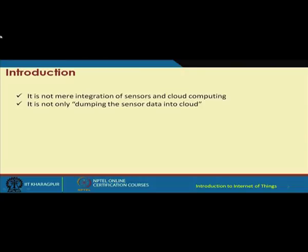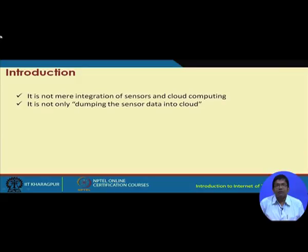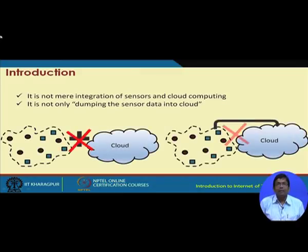In sensor networks, we are primarily concerned about sensing a particular region where sensors are deployed. In cloud computing, we are primarily talking about storage and processing of data. When we talk about sensors and cloud together, we are talking about integrating the benefits of both technologies. However, those benefits are not merely about getting sense data into the cloud or dumping the sense data to the cloud.